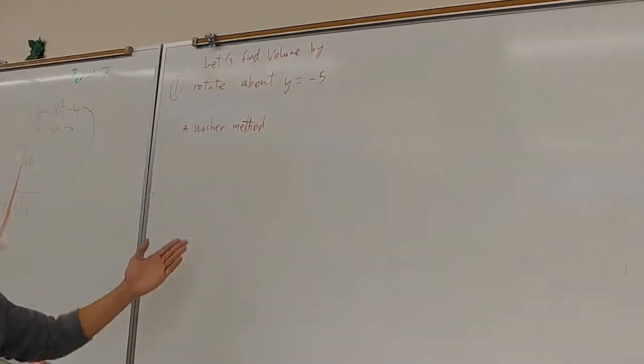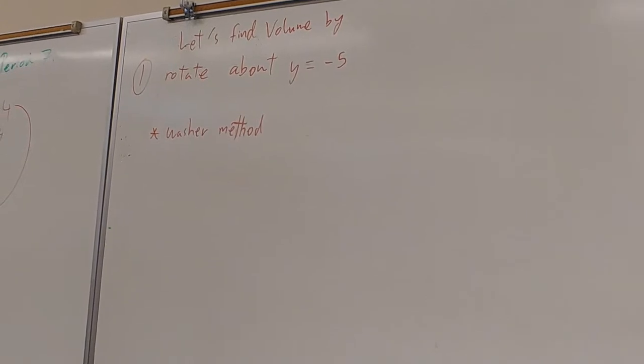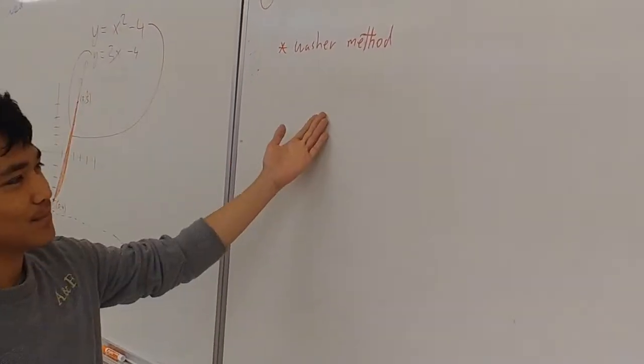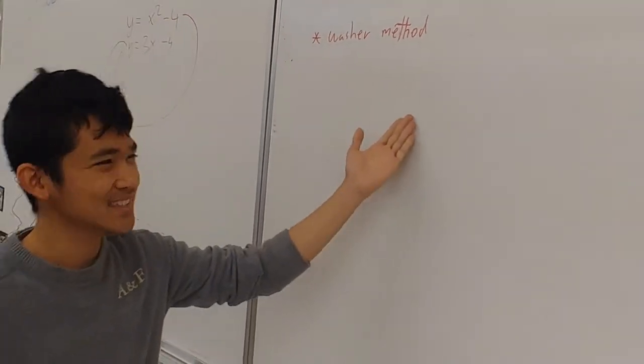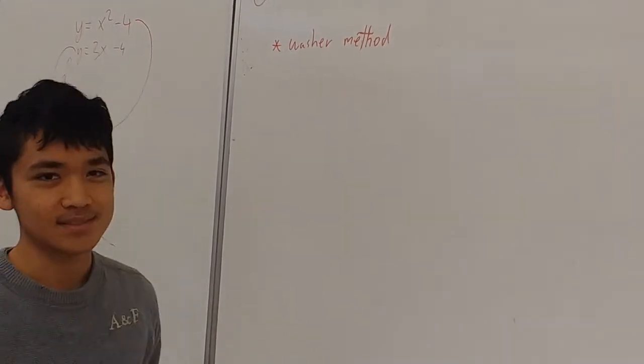We're going to find the volume of the region by rotating it about y equals negative 5, and we're going to be using the washer method because typically a region with two functions has two radiuses.